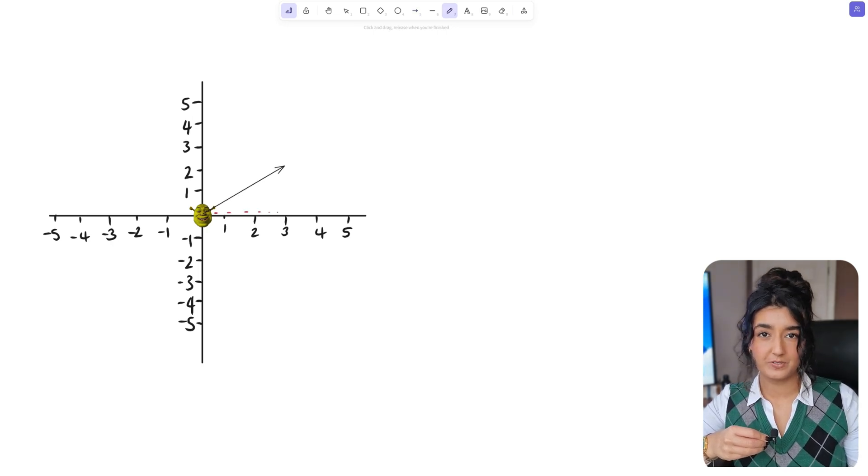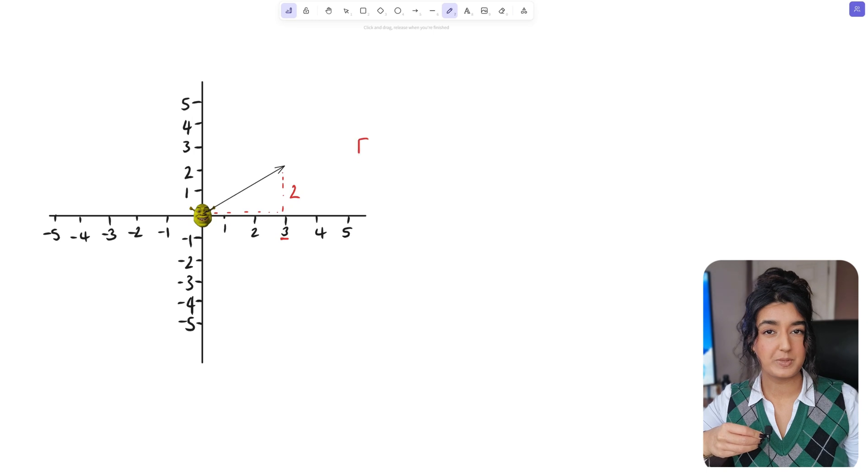This would mean we have to move plus 3 units to the right on the x axis and plus 2 units up on the y axis. This would be a 2D vector and can be written like 3, 2.